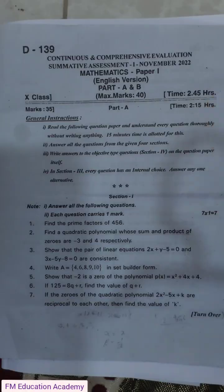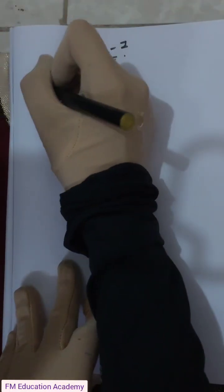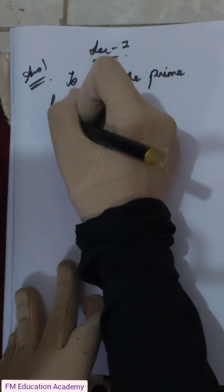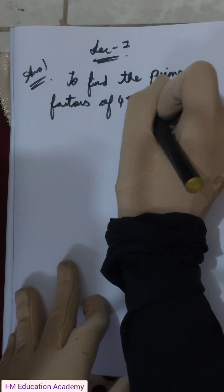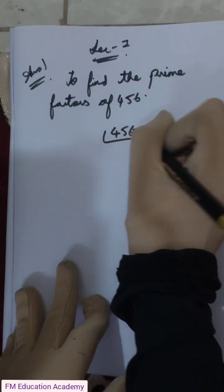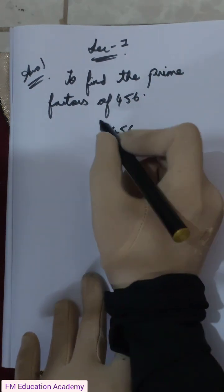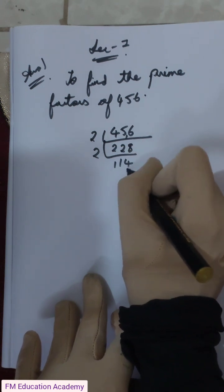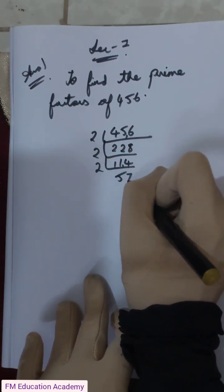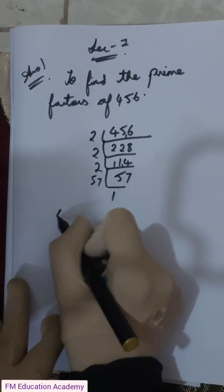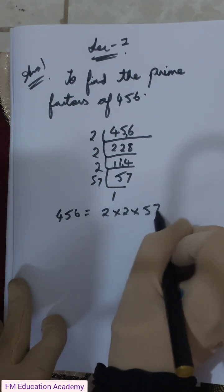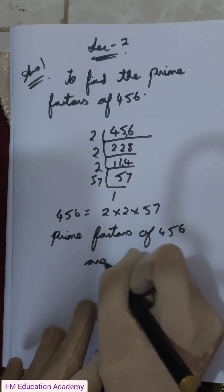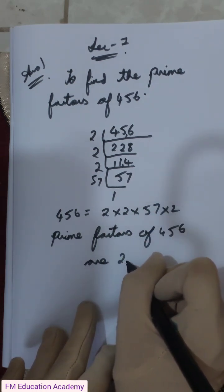Answer One: we have to find out the prime factors of 456. To do the prime factorization of 456, we divide step by step. We can write 456 as 2 into 2 into 57. So the prime factors of 456 are 2, 2, and 57.